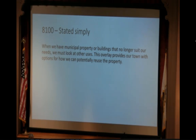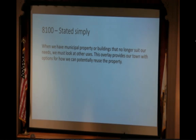I tried to state Section 8100 a little more clearly because I often have a hard time understanding what it specifically means. So 8100, which was read into the record, is basically: when we have municipal property or buildings that no longer suit our needs, we have to look at other uses. This overlay provides our town with options for how we can potentially use the property.